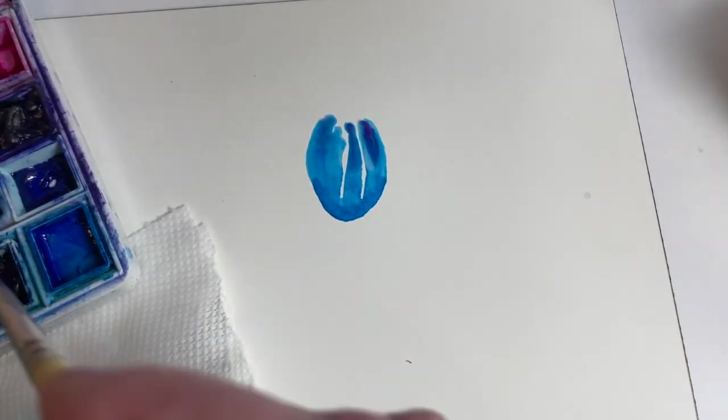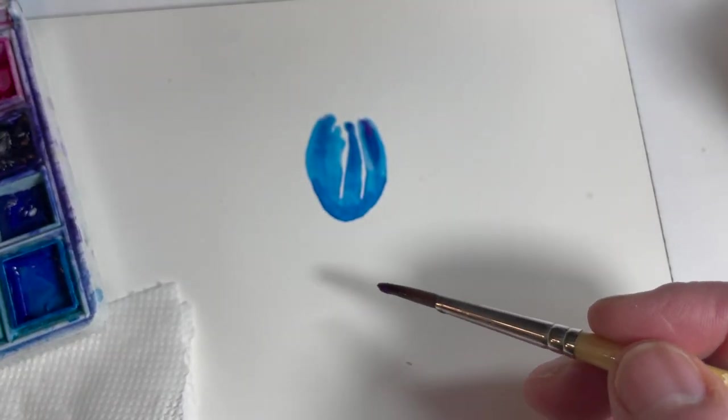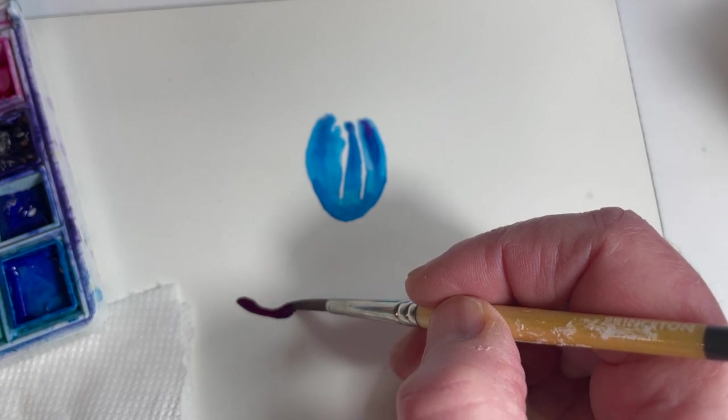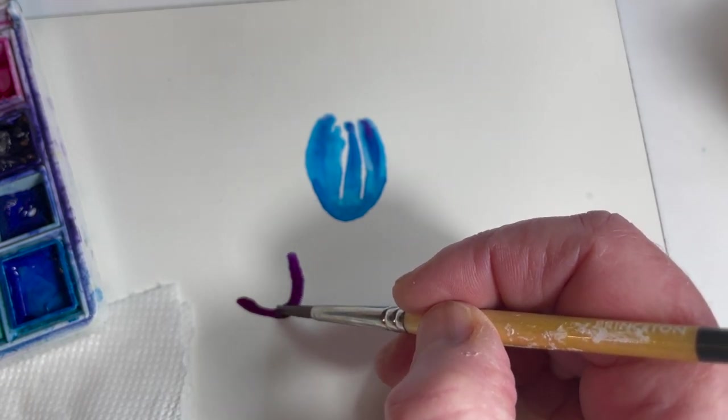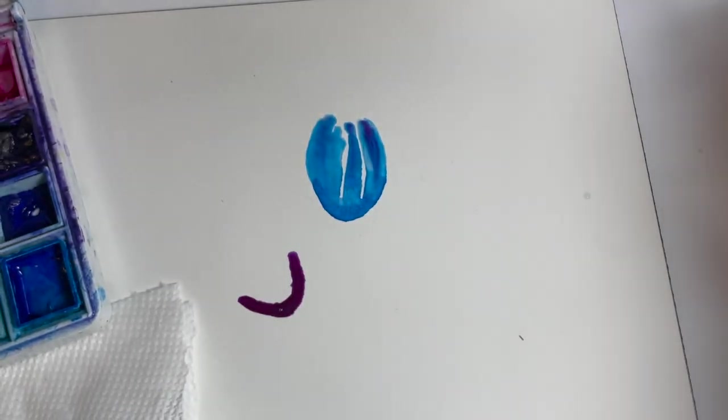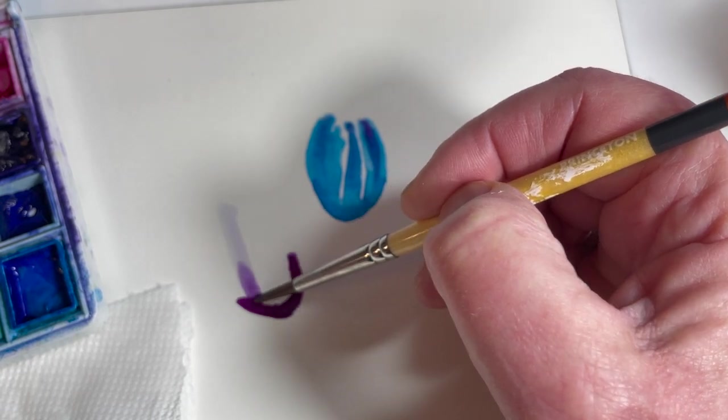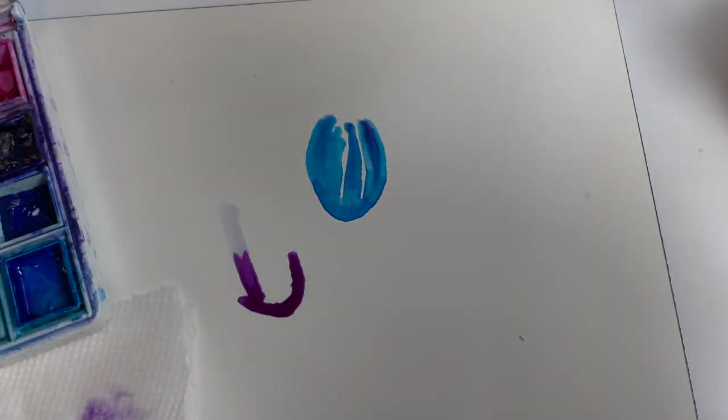Let's do that one again. So I have my brush loaded with pigment. I'm going to make a U shape, and again, that's pretty puddly. I can see that that's shiny. Now I take some clean water and I come down and I touch it, allowing the pigment to slide up that area of water.